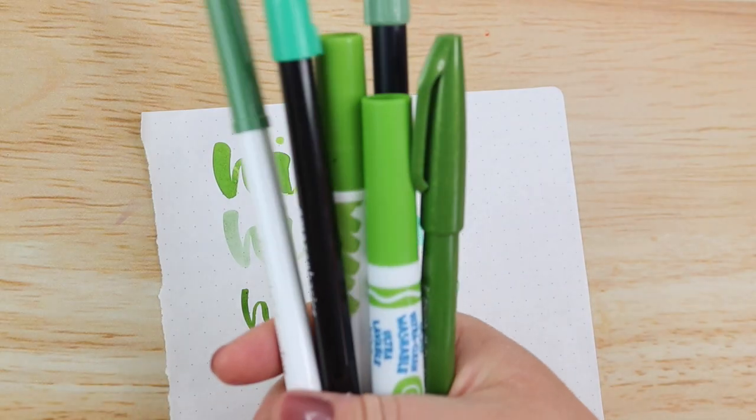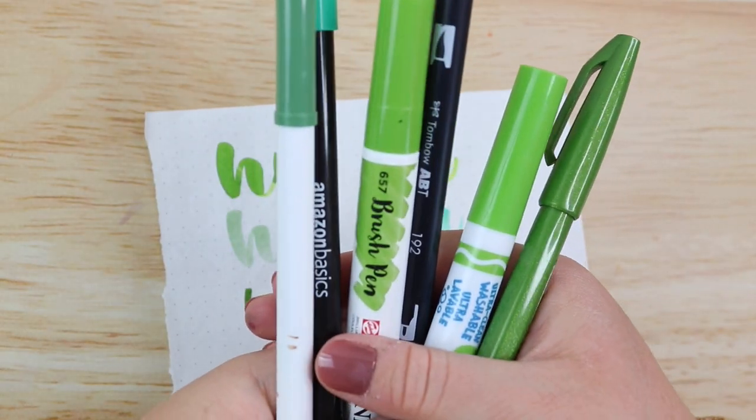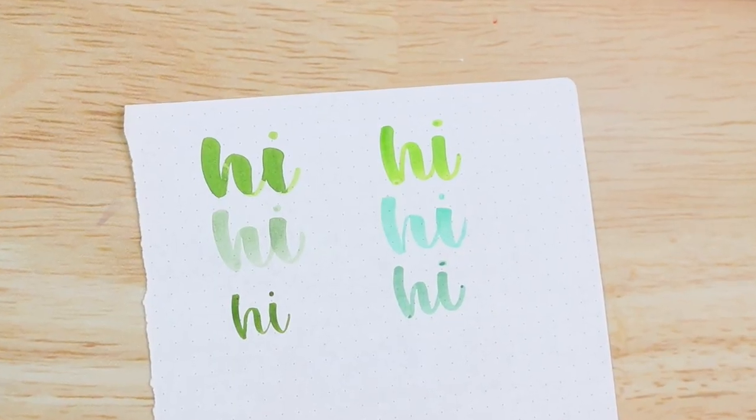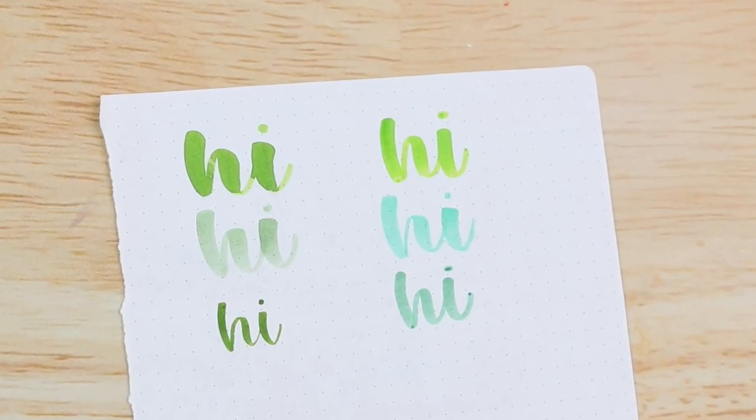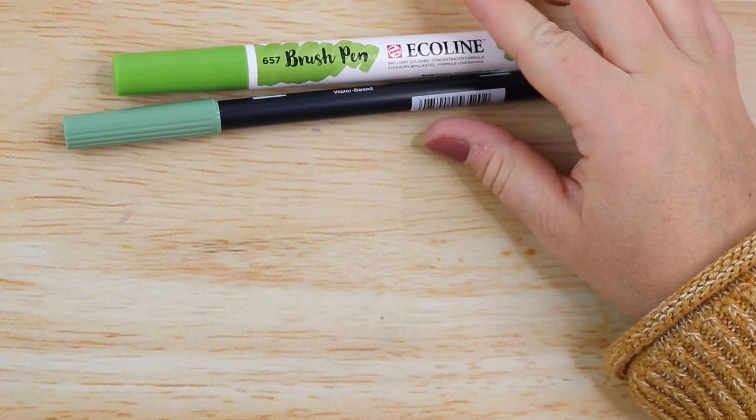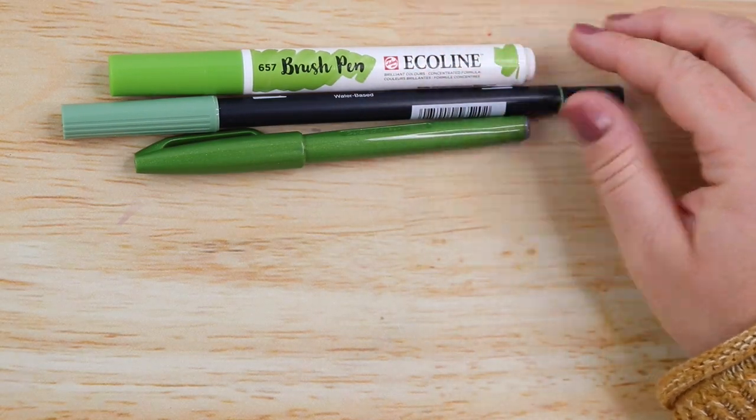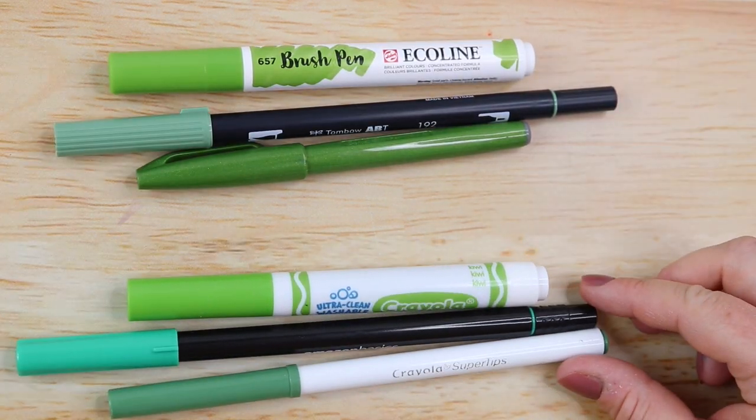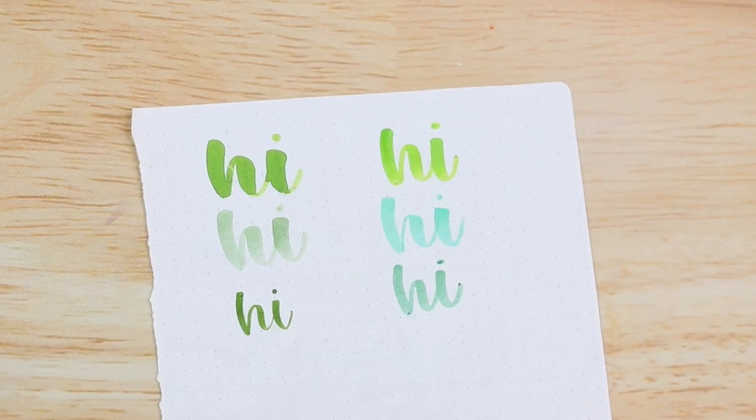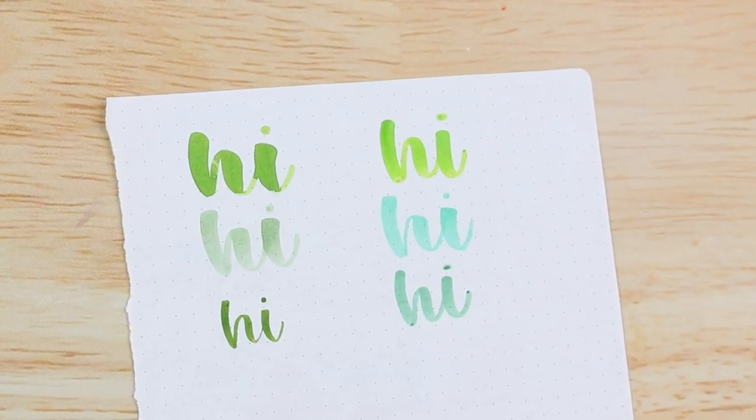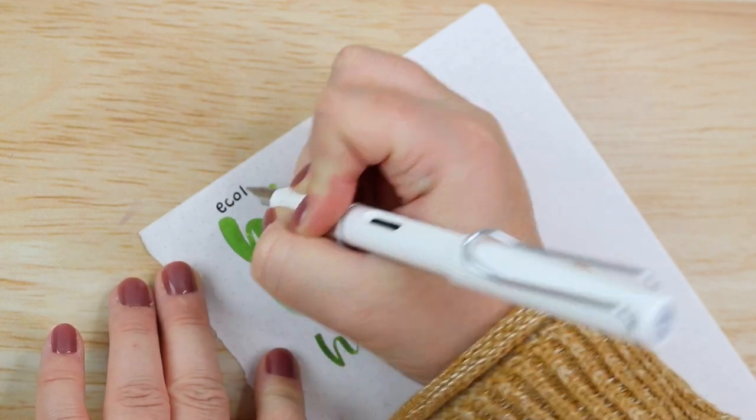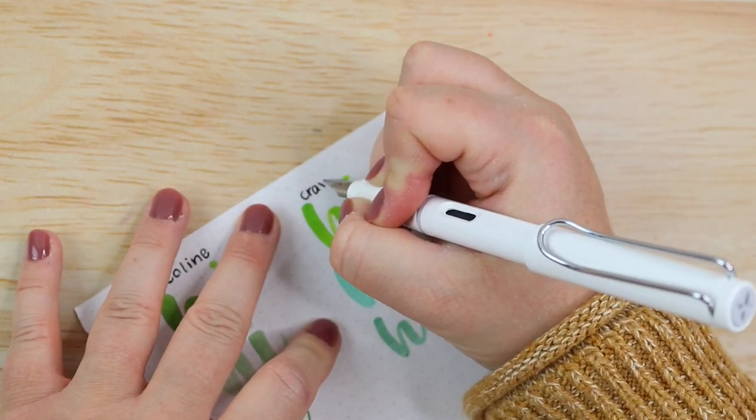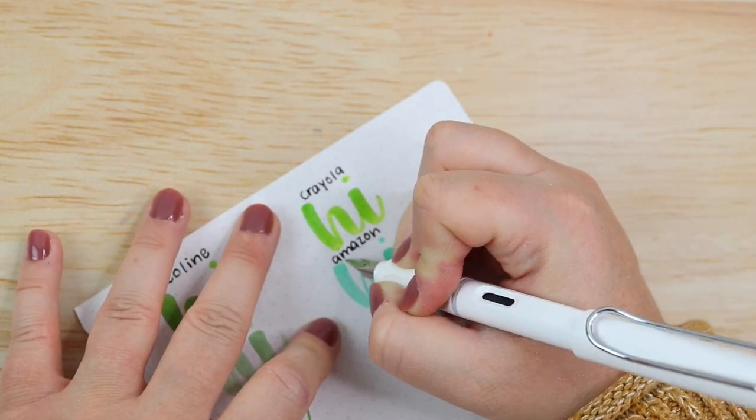The second hand lettering mistake is to assume that fancy or expensive brush pens will easily solve all of your lettering frustrations. In this example, I have done some hand lettering using six different pens or markers. Three are well known and loved by lots of people, and three are, for lack of better words, super cheap. Now can you easily tell which hand lettering was done with a fancier brush pen and which was done with a Crayola marker? It's true, not all pens are the same quality.